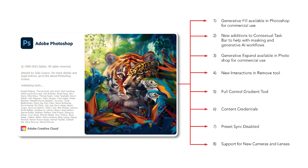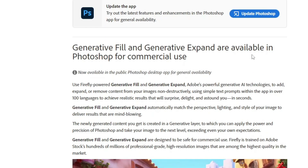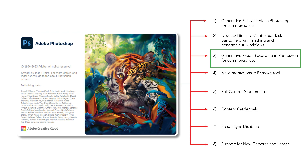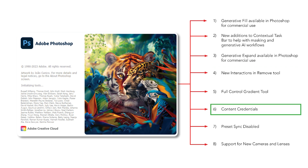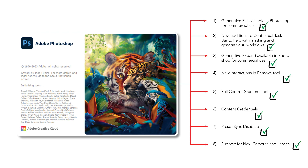Hey creators, today we're going to learn about new features and enhancements in the new Photoshop September 2023 release, desktop version 25.0, also referred to as the 2024 Photoshop version. The biggest and most important news is that generative fill and generative expand are ready for commercial use. We'll also discuss the contextual taskbar, remove tool, gradient tool, content credentials, preset sync, and new camera and lens support.